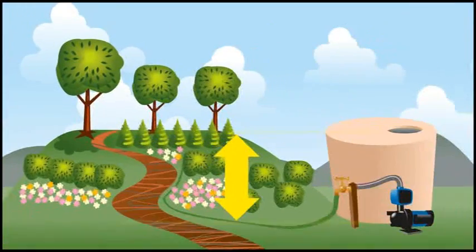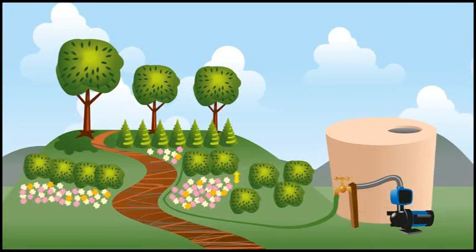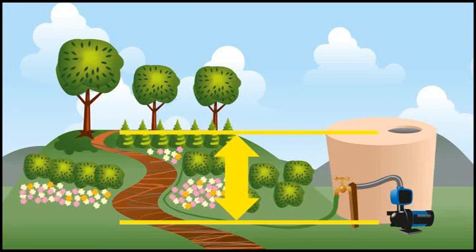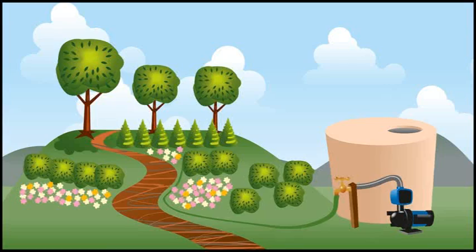Discharge height refers to the vertical difference in height between the pump and where you want the water to go. For example, an elevated garden, rooftop, or hanging baskets.